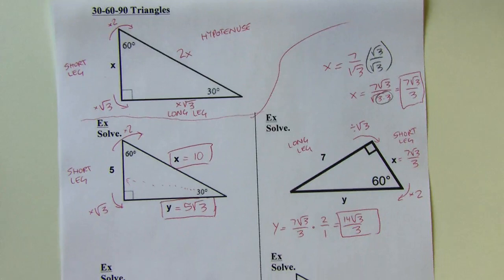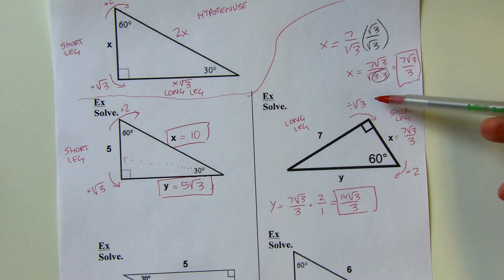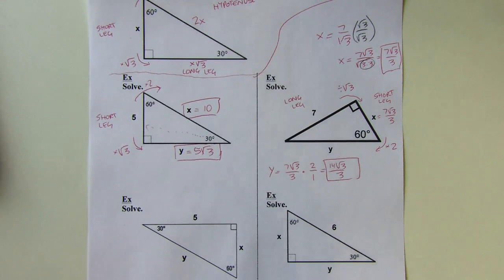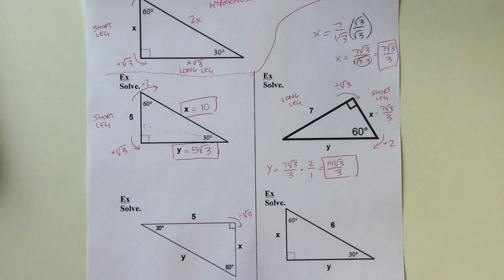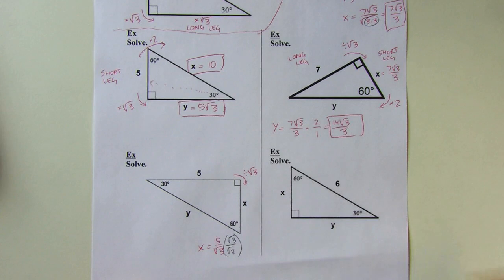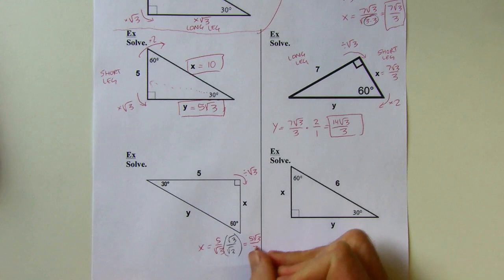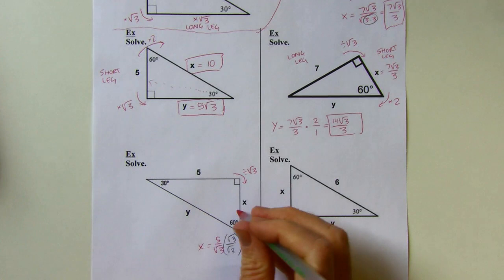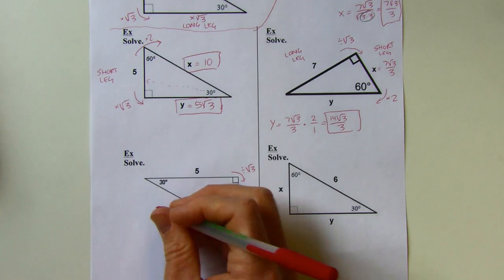These are the versions people miss the most, because you have to divide by root 3 and then rationalize, then do another step. This next problem also has the long leg given. Divide by root 3 to get the short leg: x equals 5 over root 3, which simplifies to 5 root 3 over 3. Then double that to get y, so y equals 10 root 3 over 3.